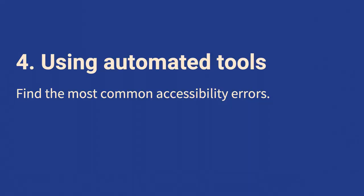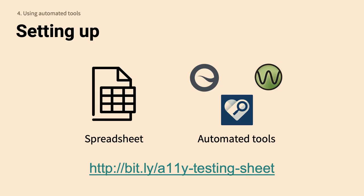Now we're going to go into a quick overview of how to use automated tools to find the most common accessibility errors. I mentioned a link to the sheet I personally use — it's a bit.ly link: bit.ly/a11y-testing-sheet. I use this to record exactly what I'm testing, with a dropdown showing all the tools I'm using. We'll be going through SiteImprove, the WAVE tool, and Microsoft Accessibility Insights.